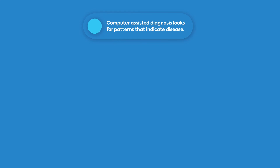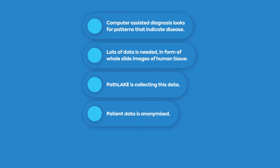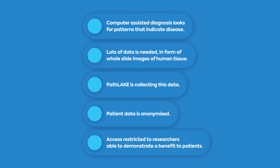So in summary, computer-assisted diagnosis is a way of using a computer to look at a tissue sample and look for patterns that indicate cancer. Making a computer program that can classify tissue as normal or abnormal needs lots and lots of data in the form of whole slide images of human tissue. PathLake is building such a collection for use by researchers making the programs for computer-assisted diagnosis. This patient data is anonymized and access to the data lake is restricted to research able to demonstrate a benefit to patients.